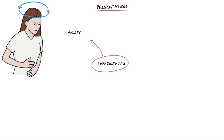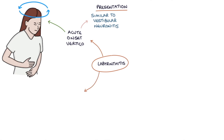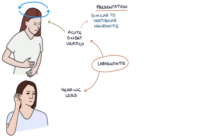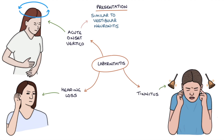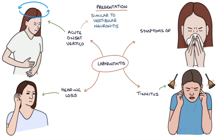Labyrinthitis presents with acute onset vertigo, similar to vestibular neuronitis. Unlike vestibular neuronitis, labyrinthitis can also be associated with hearing loss and tinnitus. Patients may have symptoms associated with the causative virus, such as a cough, sore throat, and blocked nose.